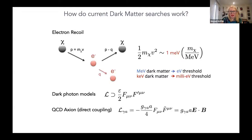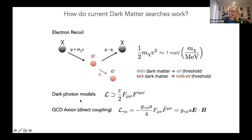For physicists in the audience: the types of models we consider, in addition to gravitational scattering, include dark photon models — essentially a copy of the Standard Model in the dark sector where dark photons are the force mediators with a mixing angle between the photon and dark photon. The second model is the QCD axion. For anyone into multiferroics or magnetoelectrics, this has a term very similar to a magnetoelectric response — an E·B term — and I'll briefly discuss how we can design materials that couple to this.